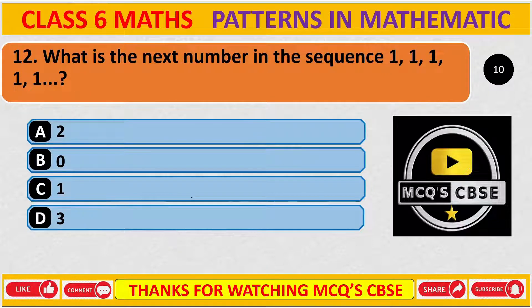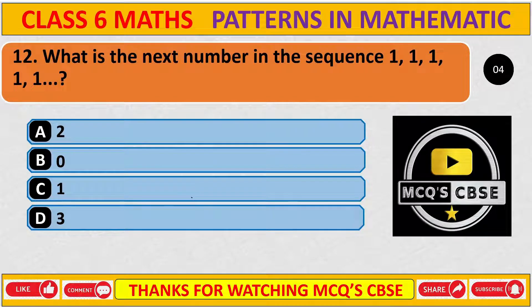What is the next number in the sequence 1, 1, 1, 1? The correct answer is C: 1.